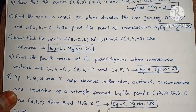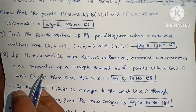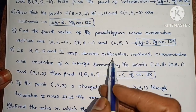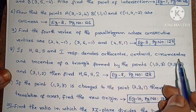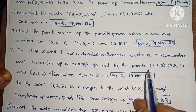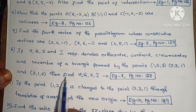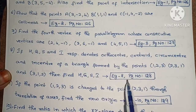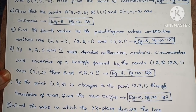This problem is very common in question papers. Next, if H, G, S and I respectively denote the orthocentre, centroid, circumcentre and incentre of a triangle formed by the points (1,2,3), (2,3,1) and (3,1,2), then find H, G, S, I. Example 8, page number 128.